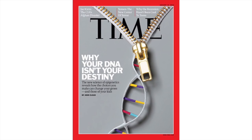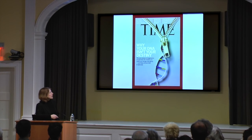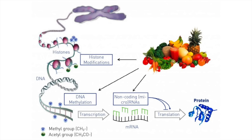Epigenetics has moved much into the public eye — 'why your DNA isn't your destiny: the new science of epigenetics reveals how the choices you make can change your genes and those of your kids.' It has become an area of common interest to think about epigenetics and not only genetics. Because we are, with our epigenome, responding to the environment. What we eat can potentially influence our epigenome — the histone modification, the DNA methylation, the microRNAs. That is in fundamental difference to genetics, which doesn't change unless you have a mutation, which happens very rarely.